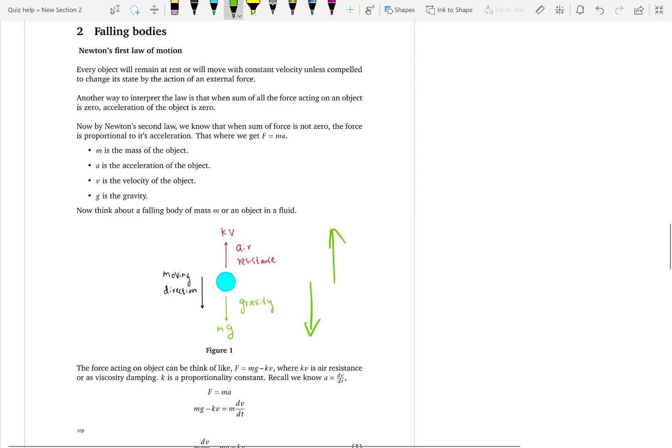Now the forces acting on the ball will be Mg minus Kv. The force that is acting downwards, pulling the ball towards the earth because of the gravity, minus the air resistance.